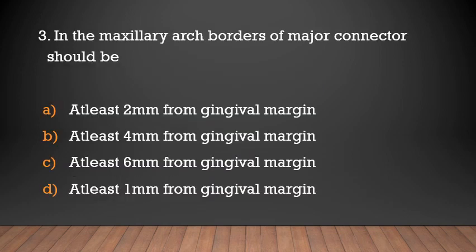In the maxillary arch, borders of the major connector should be at least how far from the gingival margin? Options: 2mm, 4mm, 6mm, or 1mm from the gingival margin.